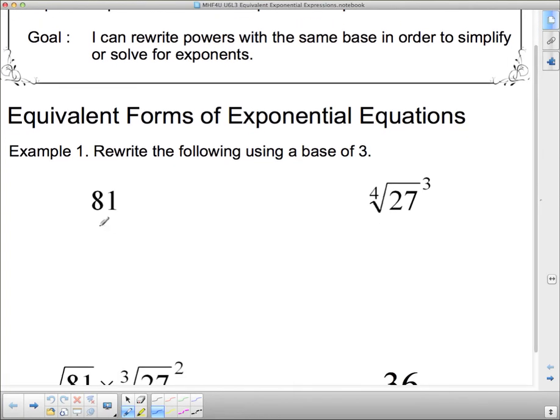So I want to rewrite 81 as a base of 3. Now you may know that right off the bat, or you may not know 3 to whatever power, but hopefully you do know that 81 is 9 times 9. And if we can write 81 as 9 times 9, then hopefully you realize that the 9's are actually 3 squared. So this is 3 squared times 3 squared. And when I put together powers with the same base, the rule is I add their exponents. So this is going to be 3 to the exponent 4. And you may have known that right off the bat. You can try it by doing trial and error on your calculator, but this is probably even quicker than trial and error on the calculator.